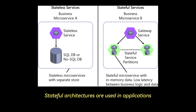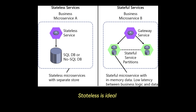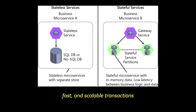Stateful architectures are used in applications like online shopping, banking, and gaming, where each action depends on what happened before, so the server needs to maintain context. Stateless is ideal for services like REST APIs, cloud functions, and microservices — use cases where independent, fast, and scalable transactions are prioritized.